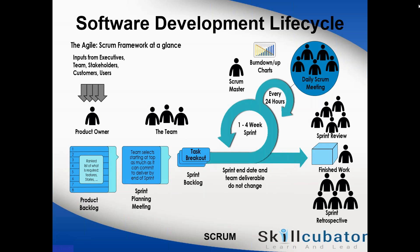There are five ceremonies in Scrum: product backlog grooming, sprint planning meeting, daily stand-up meeting, sprint review meeting, and sprint retrospective meeting. They are technically called ceremonies, but it's just a fancy word for meeting.